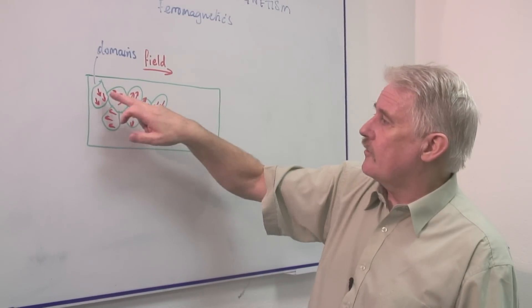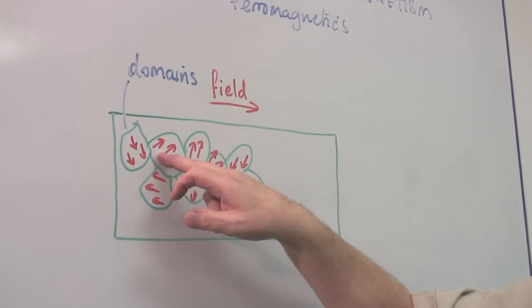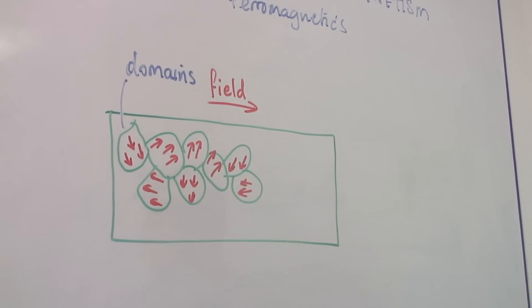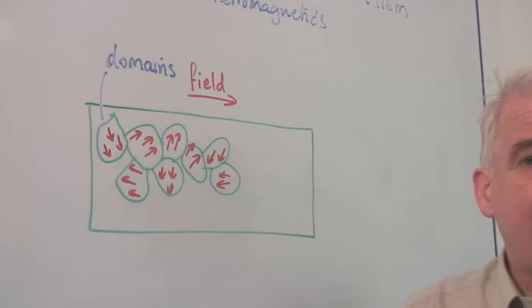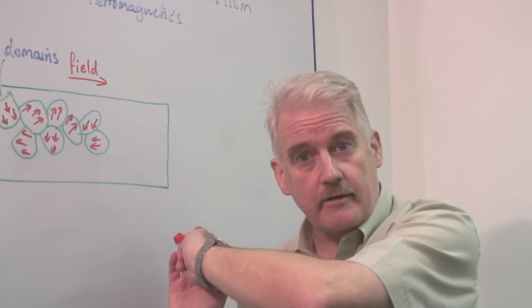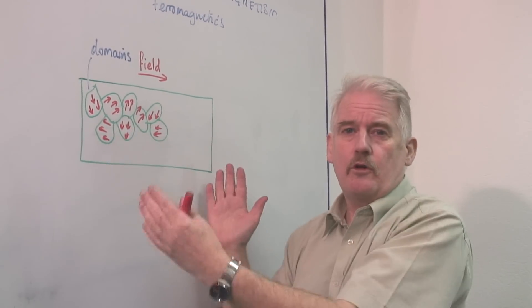These are large areas in which the magnetism of the individual atoms and molecules are all aligned in the same direction. So overall the material is not magnetic because there are as many pointing in one direction as the opposite direction. So on average there is no overall magnetic field.